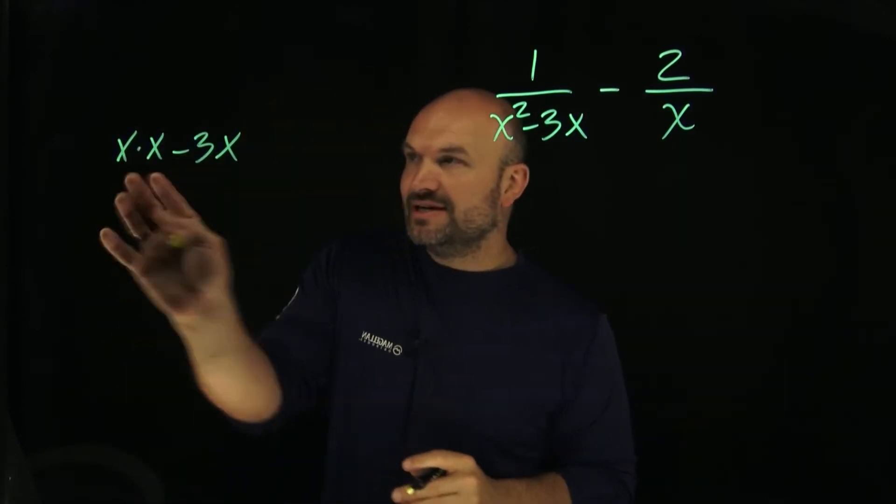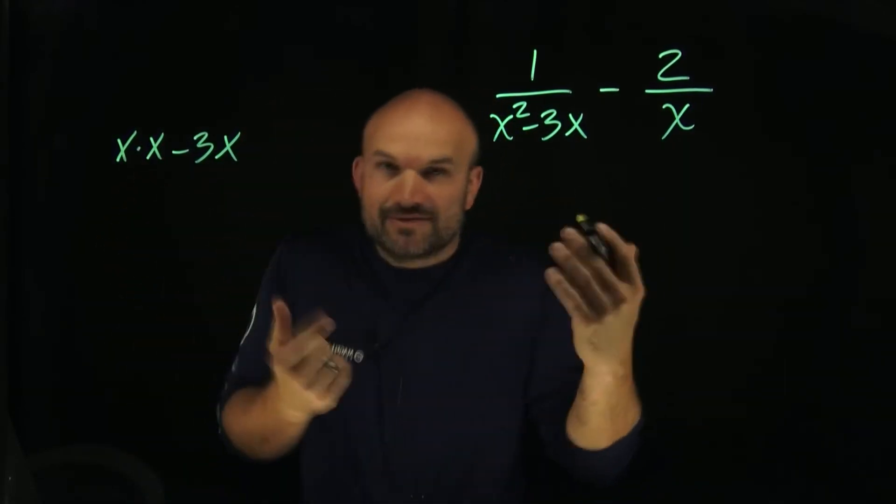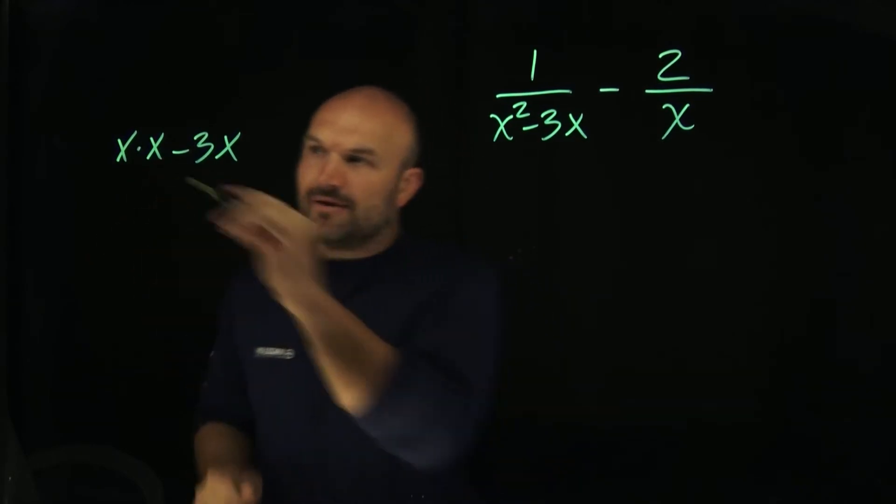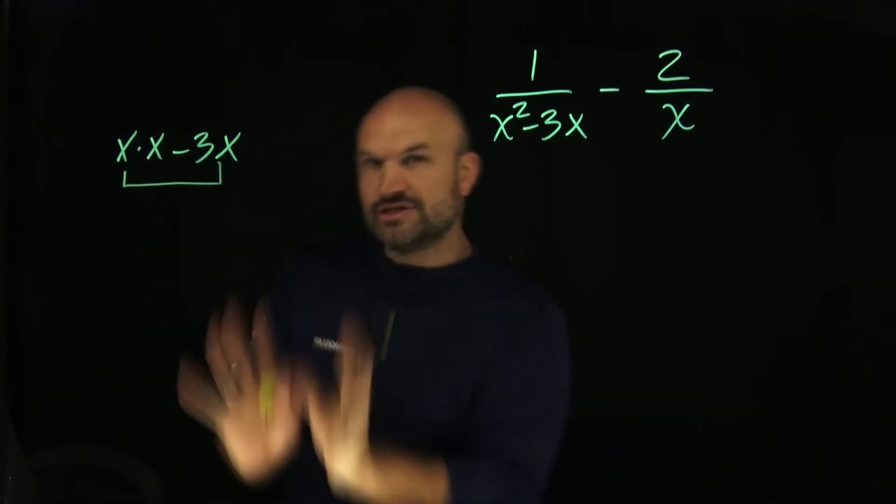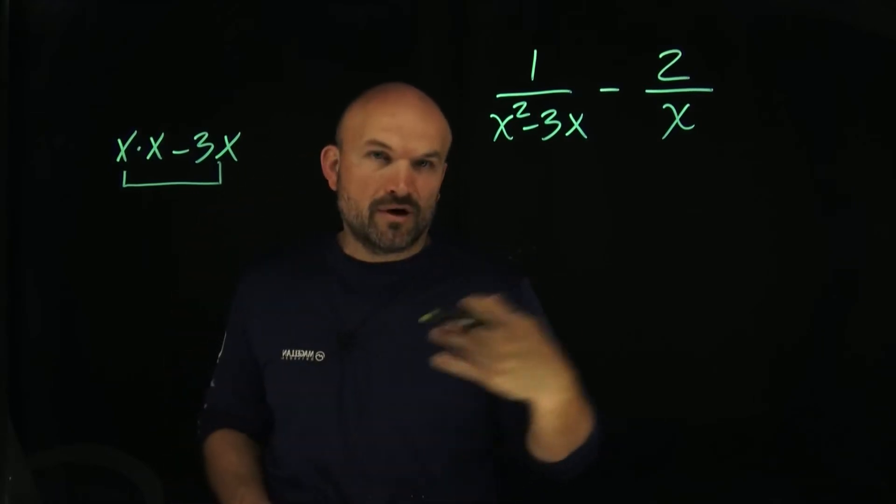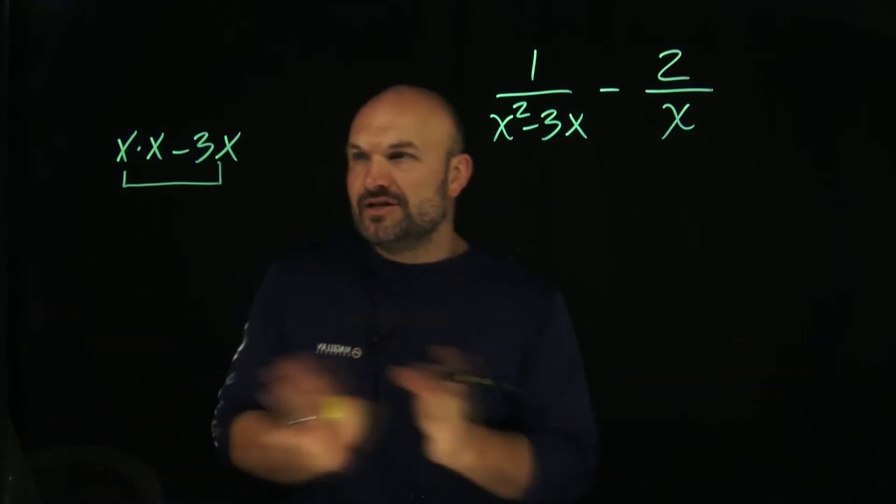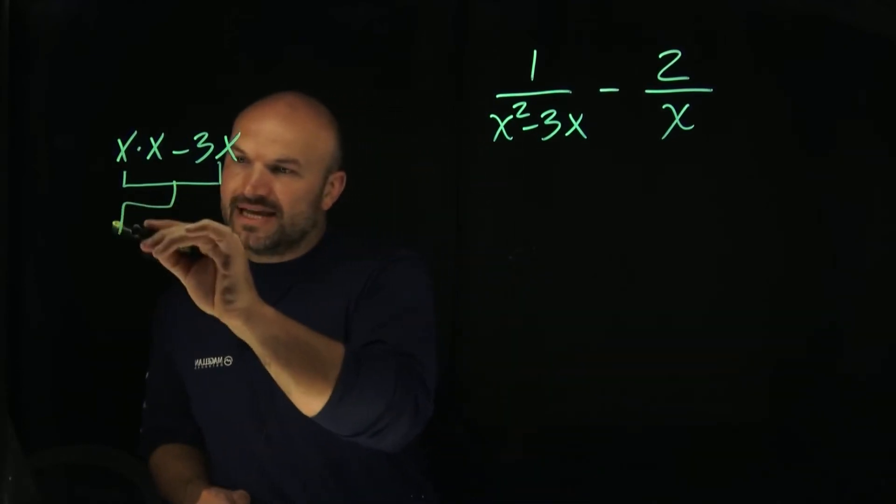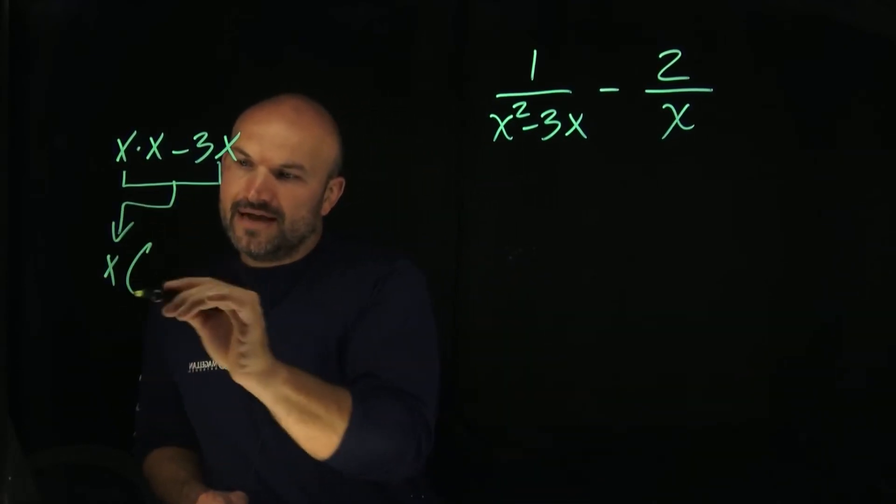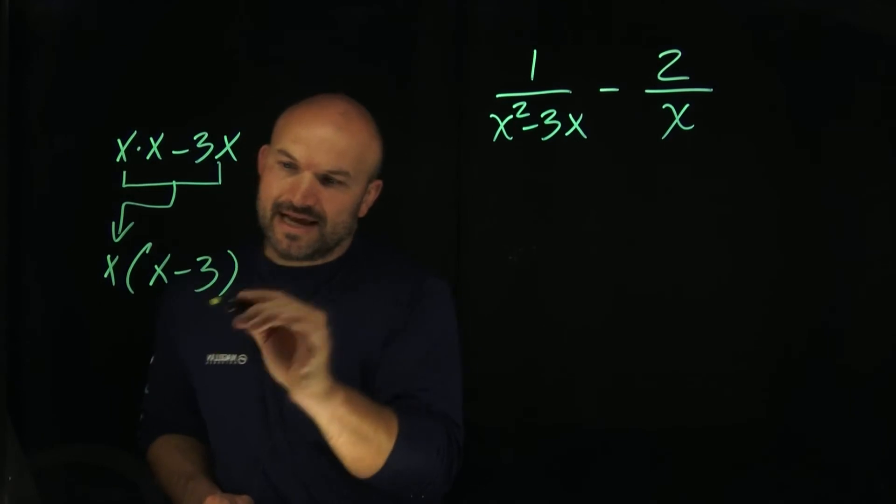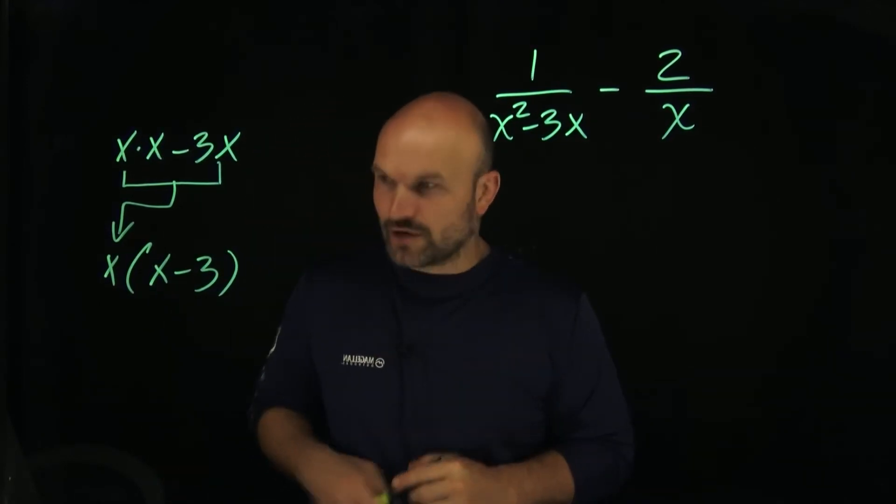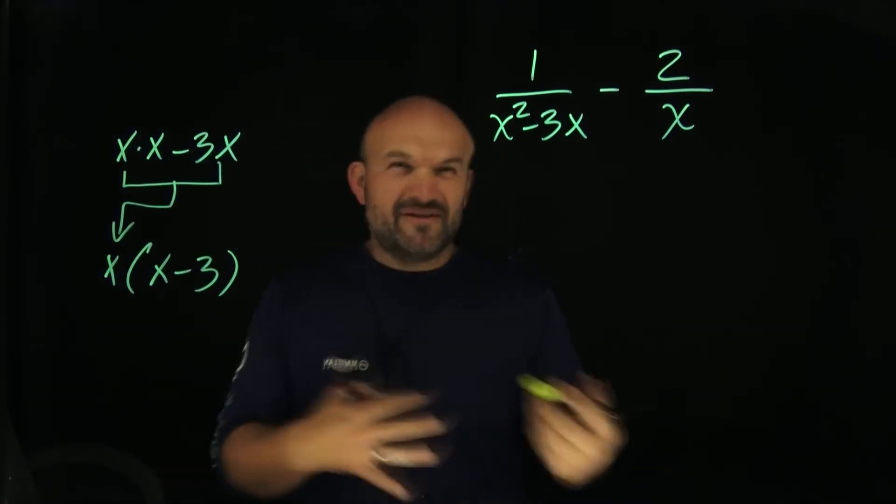So instead of writing x squared, I'm writing it as x times x. Now you can see both terms have an x in common. I can factor that out, or another way, we're basically dividing that term out. When I do that, I put the x over here and that leaves me with x minus 3. We can always go back and check our work to see if we factored correctly. That's always a great question to ask yourself.